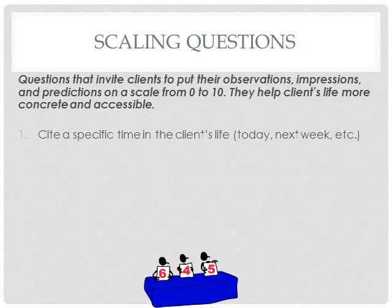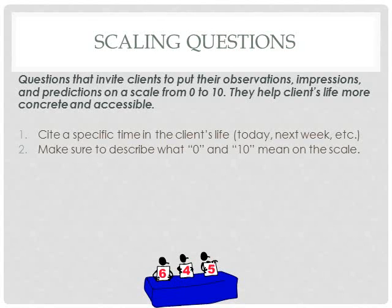When using scaling questions, cite a specific time in the client's life — whether past, present, or future oriented — and make sure to bookend it with the time. Most importantly, describe what zero and ten mean on the scale. A common mistake is asking 'on a scale of zero to ten, how confident are you that you can solve this problem?' without clarifying what zero and ten mean — the client might not know what they mean in respect to the scale. Be very clear: 'On a scale of zero to ten, where zero means you have no confidence at all and ten means you have all the confidence in the world — where on that scale would you place yourself when it comes to your confidence in being able to solve this problem?'